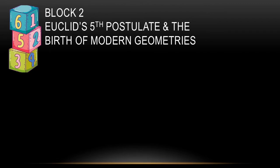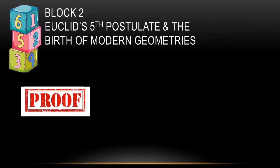Block number 2 is Euclid's 5th postulate and the birth of modern geometries. In this block, you are expected to write a proof and to answer an objective test.